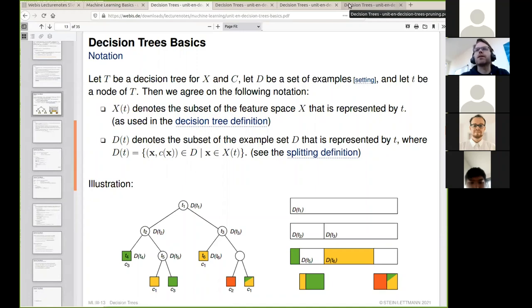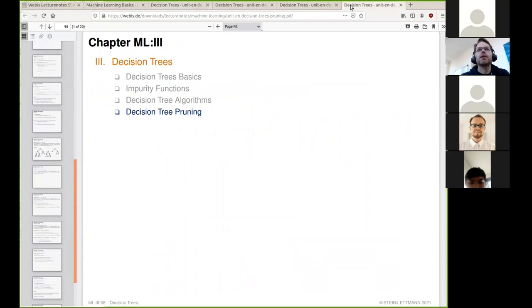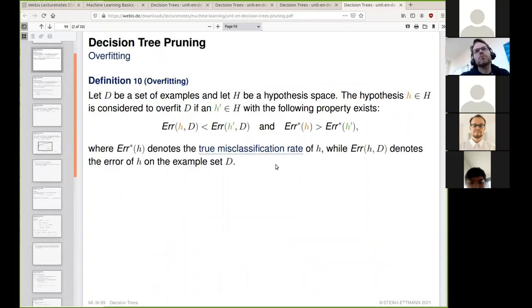If there are contradictions in the example data, the algorithm cannot go further. But if there are no contradictions, we will go as far as possible. This means the model is complex and will, with some likelihood, overfit to the training data.